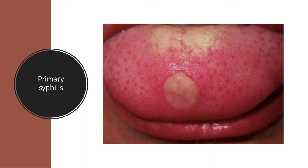This humoral response, however, fails to eradicate the organisms. Primary syphilis is characterized by a chancre, or multiple chancres, at the point of entry of Treponema pallidum spirochete.